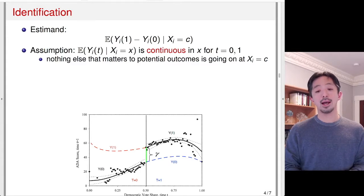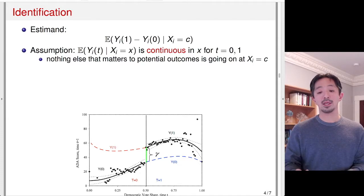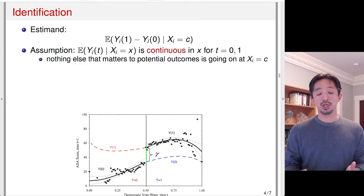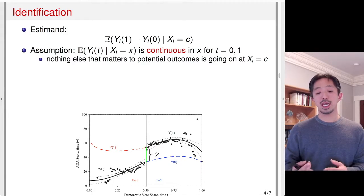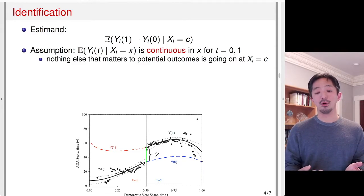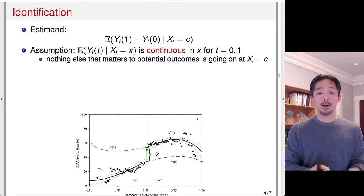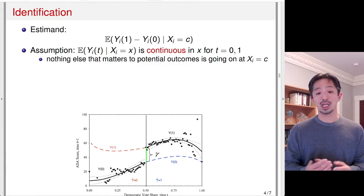In the figure, you see the black line, which is the identifiable quantity — the observations on the right are the treated observations. So you observe Y(1), and we can identify the mean of Y(1) given X; that's the black line. That line extends to the left as the dotted red line, indicating it's not observable and not identifiable. There's no gap when you go from the black line to the red dotted line crossing the threshold. That's what continuity means.